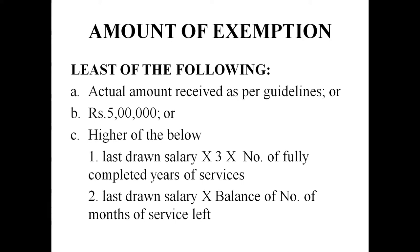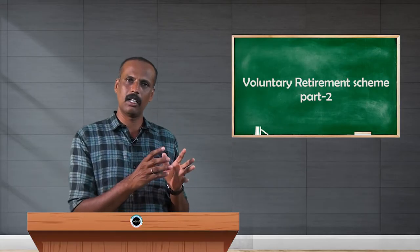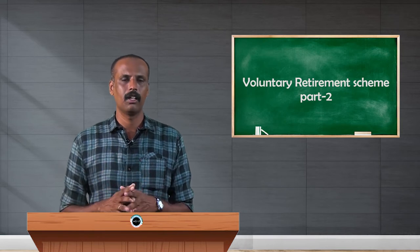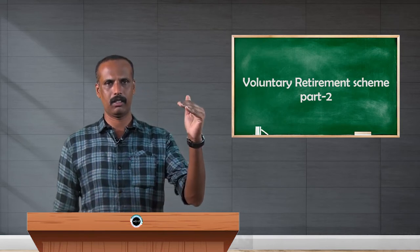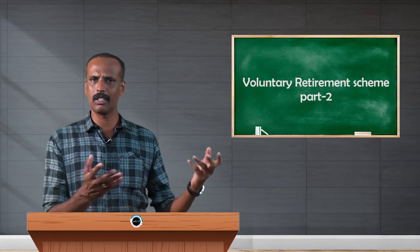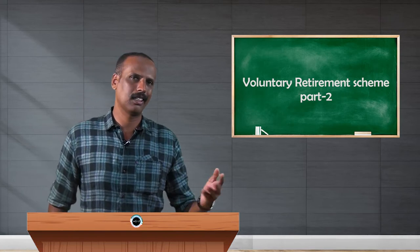Let us discuss each item. The first item is the actual amount of compensation received as per the guidelines. As discussed, there is a guideline for VRS compensation, and the employee is eligible to receive a certain amount. That amount, as given in the question when you calculate the illustration, is the first one.